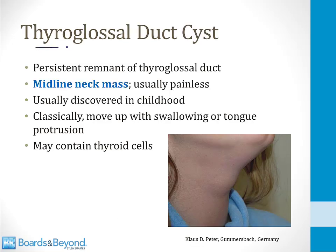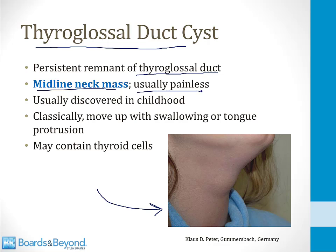Some patients have a thyroglossal duct cyst — a persistent remnant of the thyroglossal duct. It presents as a midline neck mass, usually painless, typically discovered in children, as shown in this example on screen. Classically, it will move up with swallowing or tongue protrusion because it still has some connection to the mouth and tongue. Sometimes it even contains thyroid cells when examined under the microscope.